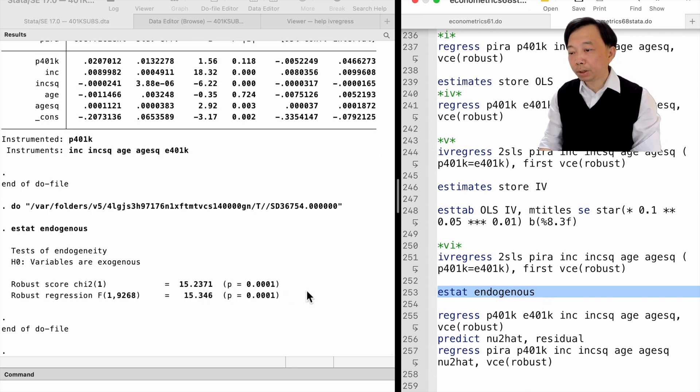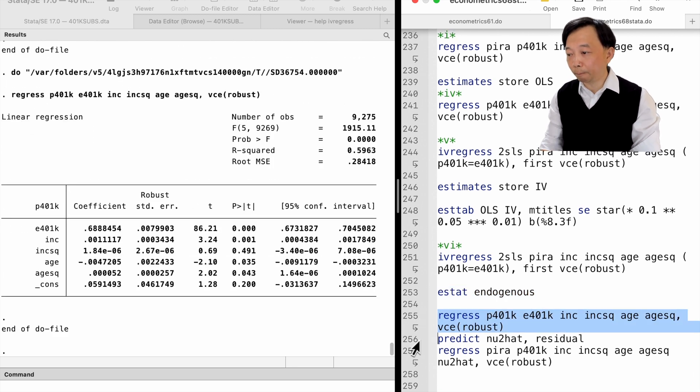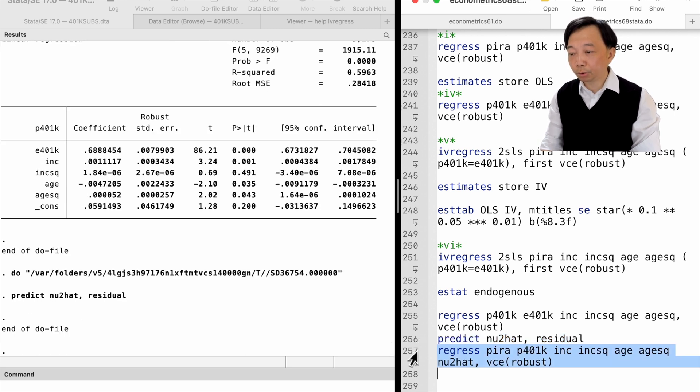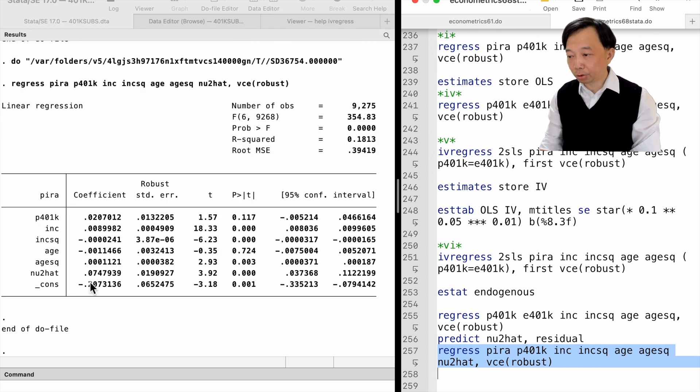Or, we can do it by hand. We first estimate the reduced form equation for P401k and obtain the reduced form residuals nu 2 hat. Then, we add nu 2 hat to the structural equation and test for the significance of nu 2 hat. The null hypothesis is that P401k is exogenous.